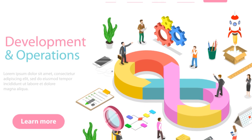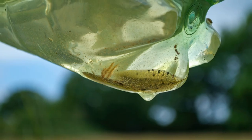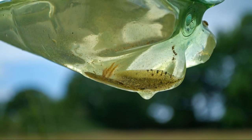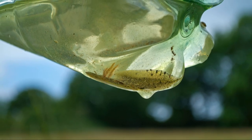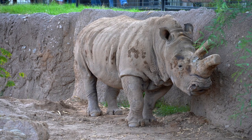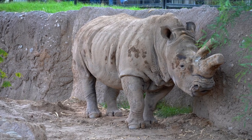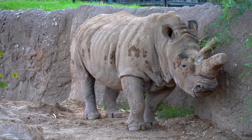Understanding population size and density is essential for conservation efforts. By monitoring these metrics, scientists can identify populations at risk of decline and implement appropriate conservation strategies to protect endangered species and manage ecosystems for long-term sustainability.